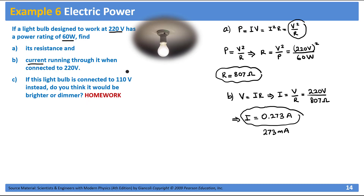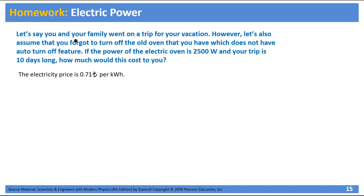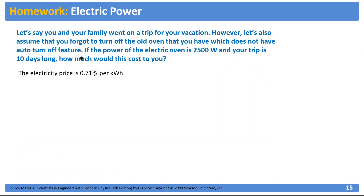Part c is a homework problem: if this light bulb is connected to 210 volts instead of 220, would it be brighter or dimmer? Calculate the new power output at 210 V and compare it to 60 watts. Another homework problem: you go on a 10-day vacation after this pandemic is over and forgot to turn off your electric oven — how much would this cost you if you pay 0.71 Turkish lira per kilowatt-hour? Stay safe, stay healthy, and we'll talk later.